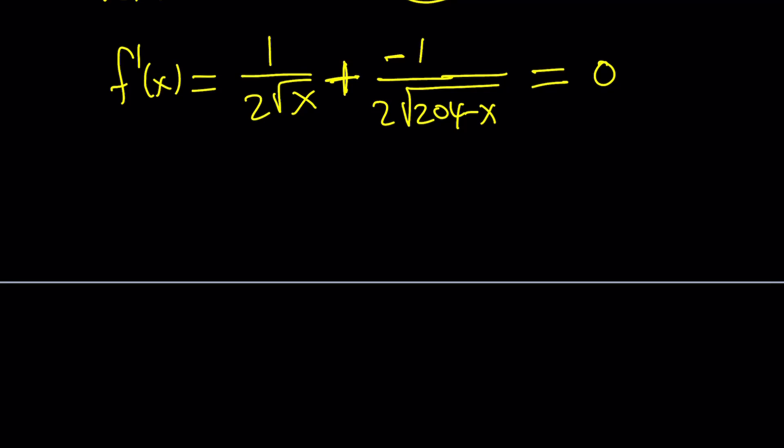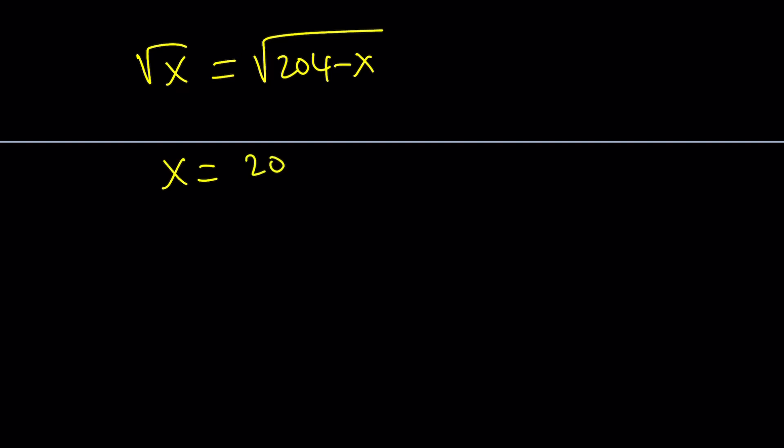Where f prime is 0, we'll probably get a horizontal tangent where our function will have a maximum point or a minimum point. From here, by setting these equal to each other, we get √x equals √(204-x) because the numerators are the same. The denominators have both 2, we can cancel them out. From here we get x equals 204 minus x, which means 2x is equal to 204 and x is equal to 102.